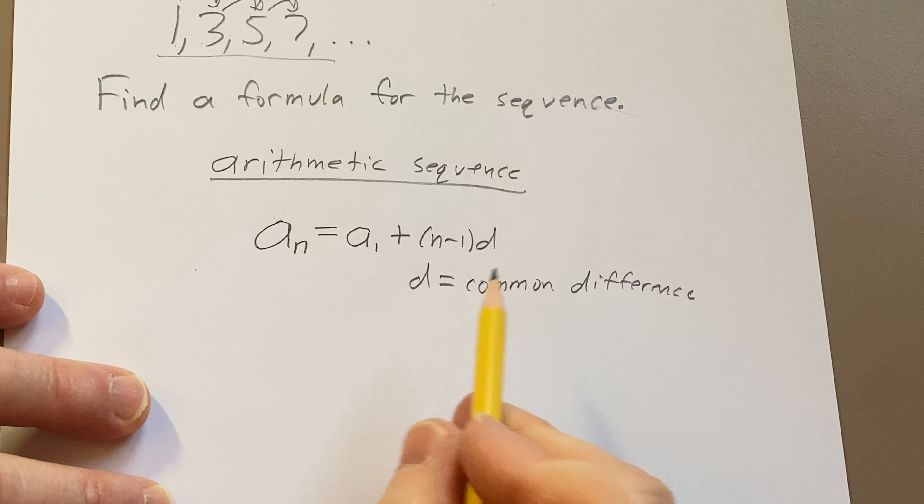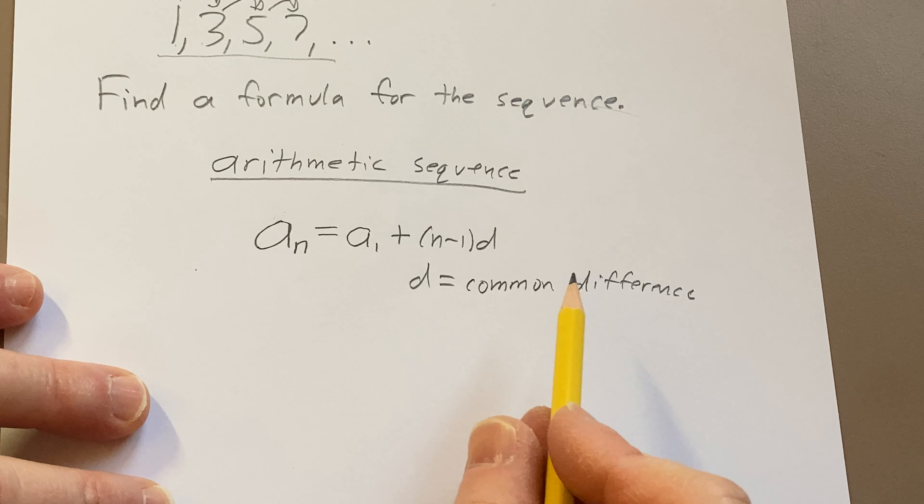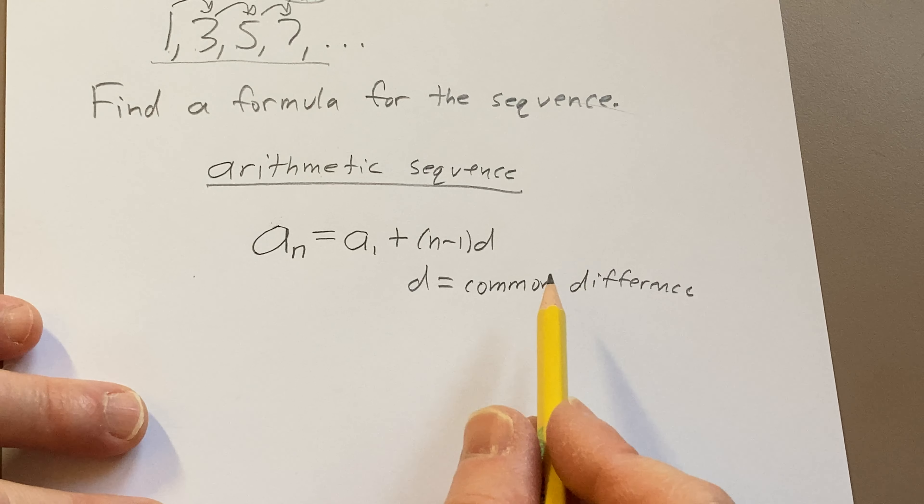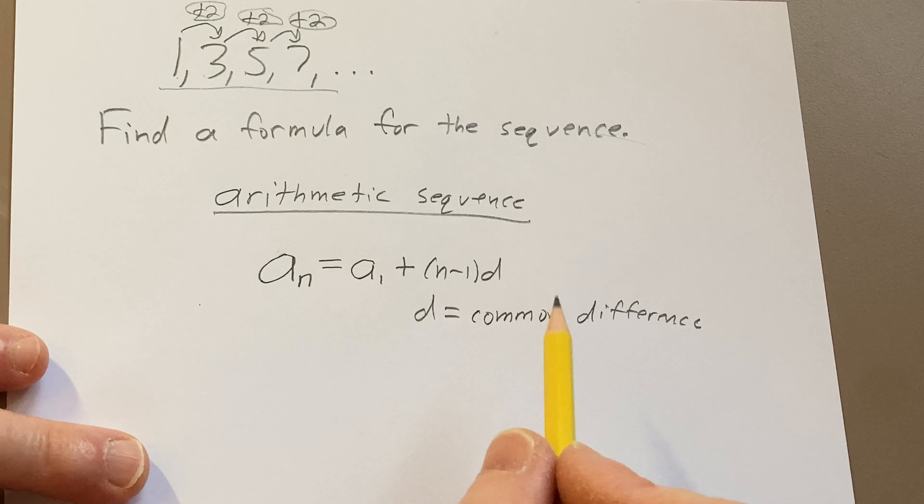By the way, just extra knowledge, the analog of this for multiplication is a geometric sequence. In that case, it's not the common difference, it's the common ratio, and we use the variable r. So this is kind of like a geometric sequence, except you're adding, so it's called arithmetic.